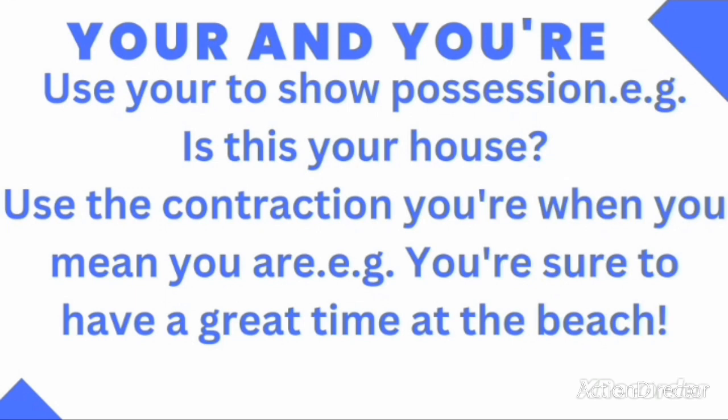We move on to your and you're. Use your to show possession. For example, is this your house? Use the contraction you're when you mean you are. For example, you're sure to have a great time at the beach.